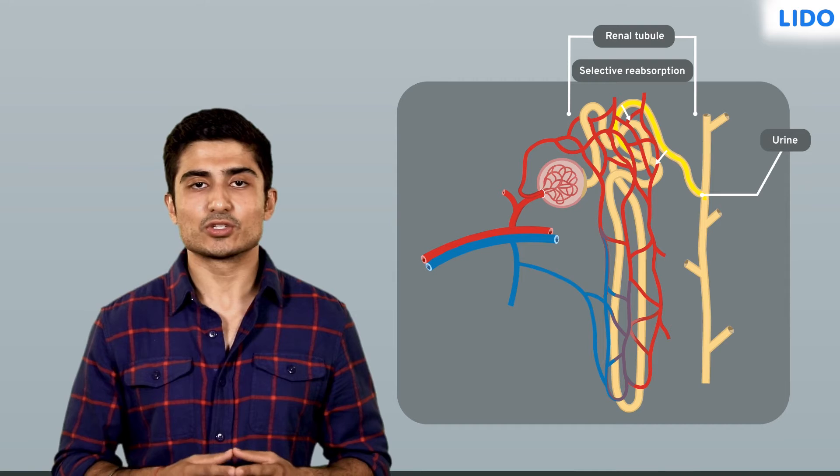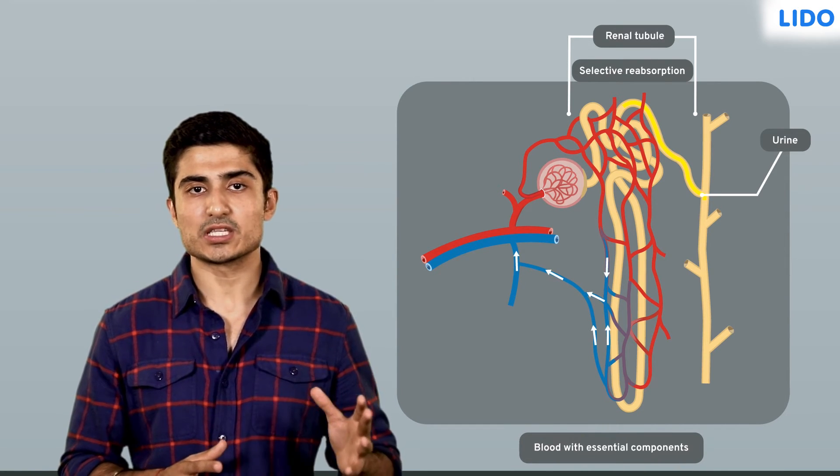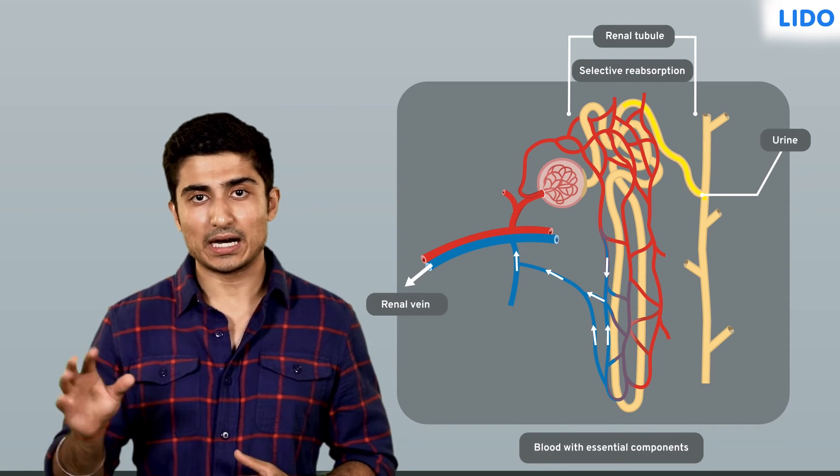At this stage, the two components are separated. The essential components that return back to the capillaries are finally transported to the renal vein, which then takes it back to the heart.